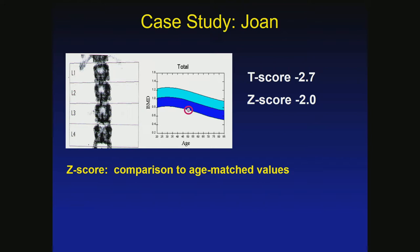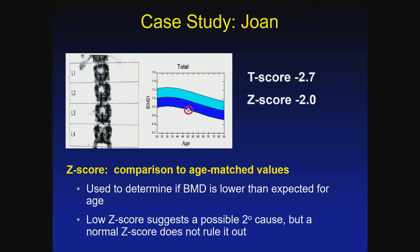We look at Z-scores to see how they compare to their peers. If the Z-score is lower than minus 2 or minus 1.5, that's a red flag and you really want to think about doing more workup for secondary causes of bone loss. It is not a definitive diagnosis, but it helps determine if bone density is lower than expected for age, suggesting a secondary cause.